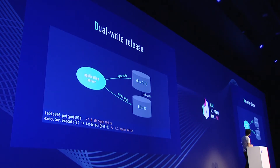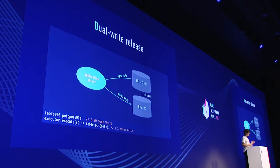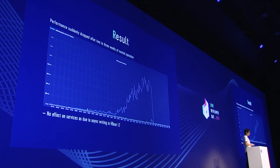So it was quite a cumbersome solution, but somehow we were able to make it work. Now finally we're at step one release. There was one tweak we did: on the new cluster, we wrote asynchronously. By asynchronously, I mean we're using Tomcat here, so we tried not to block the Tomcat thread. We used another thread to keep on writing. By doing so, if there are any issues on the 1.2 cluster, it will not affect the service. So while we had the safety net, we released this dual write.